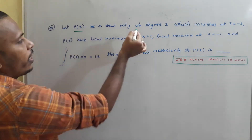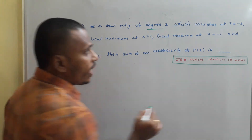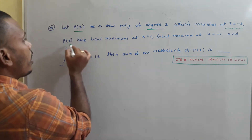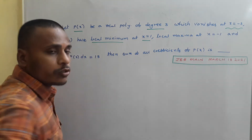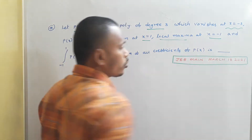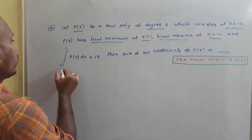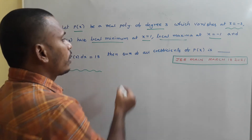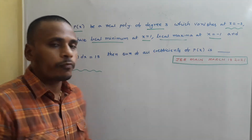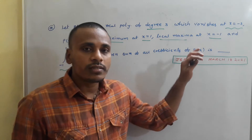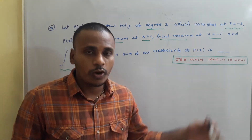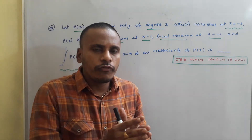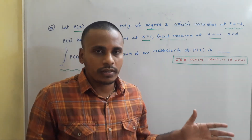Let P(x) be a real polynomial of degree 3 which vanishes at x = -3. P(x) has local minima at x = 1, local maxima at x = -1, and the integral from -1 to 1 of P(x) dx equals 18. We need to find the sum of all coefficients of P(x).